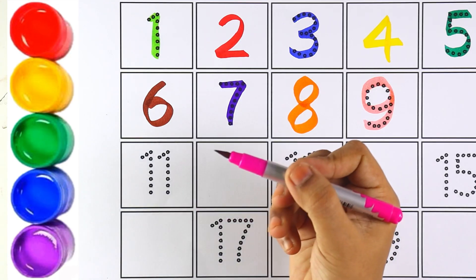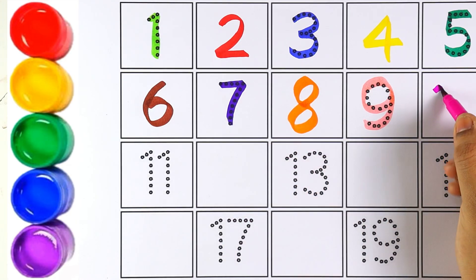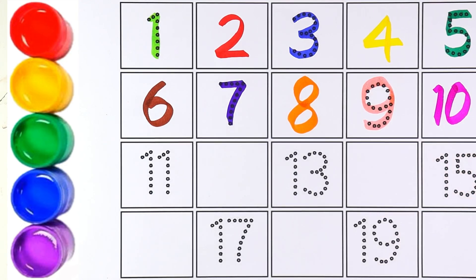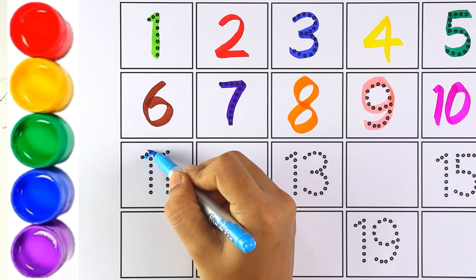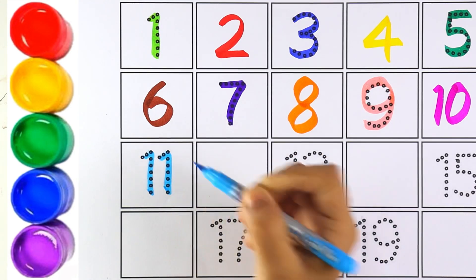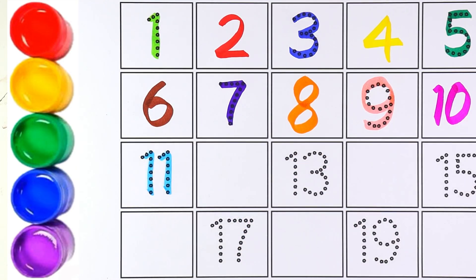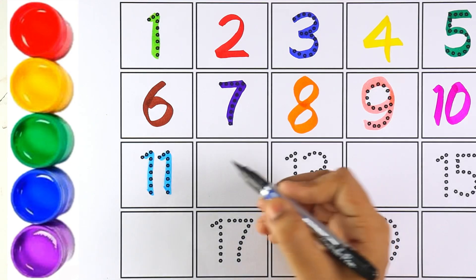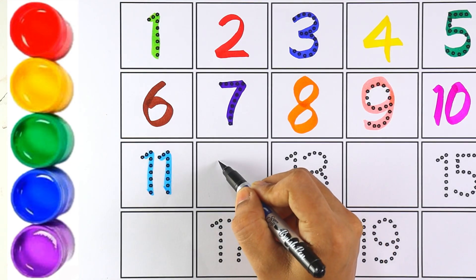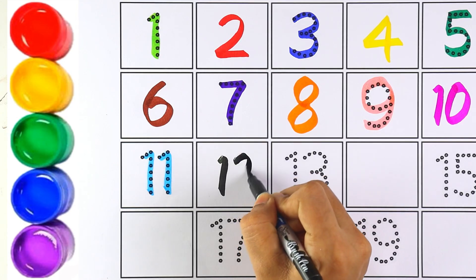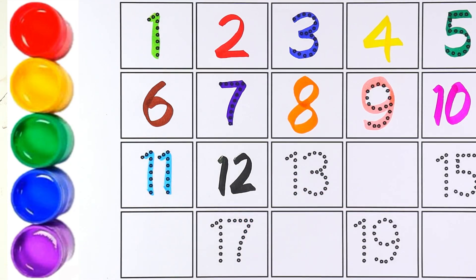Pink color, number ten — one and zero makes the number ten. Sky blue color, number eleven — one and one means number eleven. This is black color and I am writing number twelve — one and two makes the number twelve.